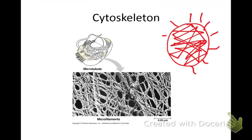The cytoskeleton has various sized proteins. The next three things — microtubules, microfilaments, and intermediate filaments — are just the different sizes of protein filaments. Think of these as proteins in the shape of a pipe or a tube; they're what make up the cytoskeleton. There are three different kinds.